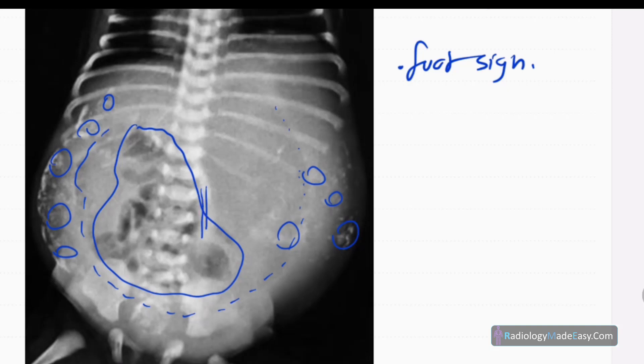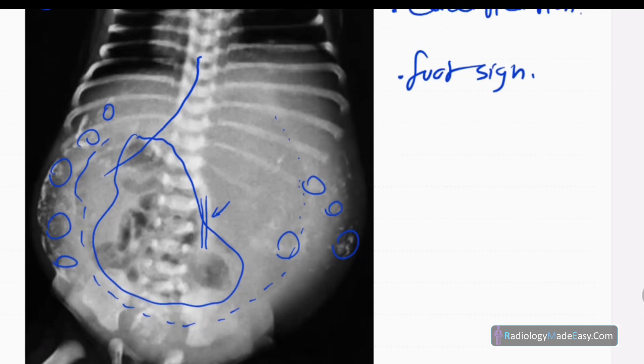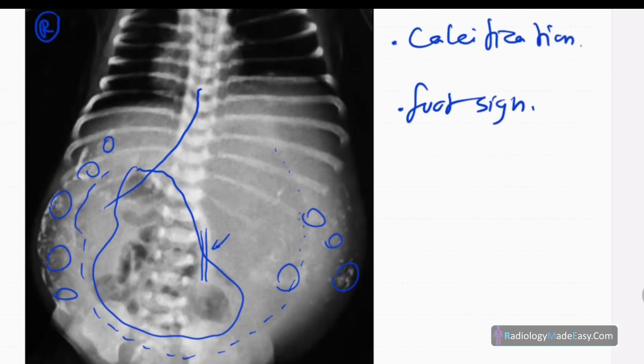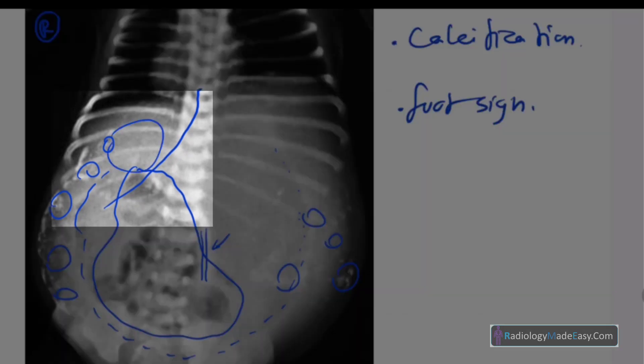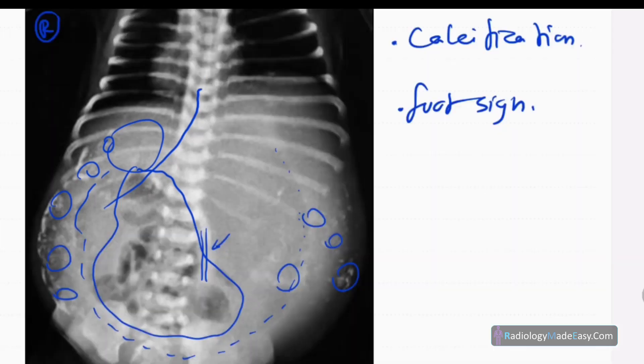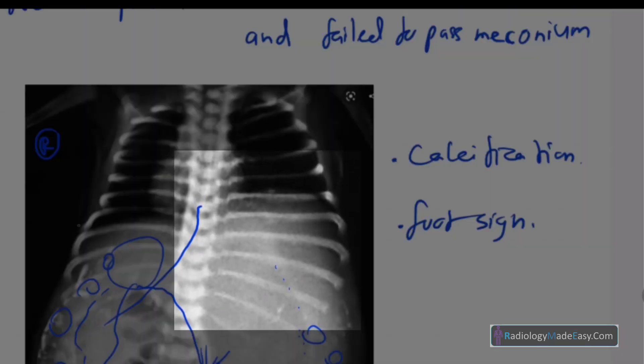This is probably the median umbilical ligament, and NG tube is also inside. No obvious pneumatosis intestinalis, no portal venous gas. However, this liver shadow is also obscured by this pneumoperitoneum. No diaphragmatic hernia, no chest abnormality.